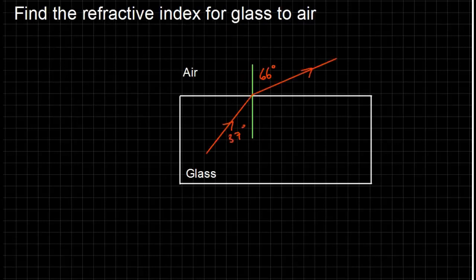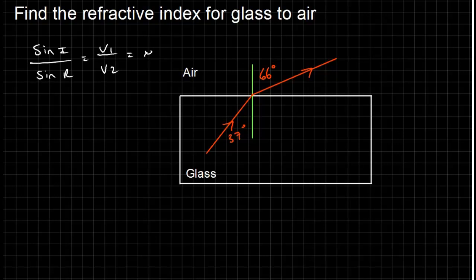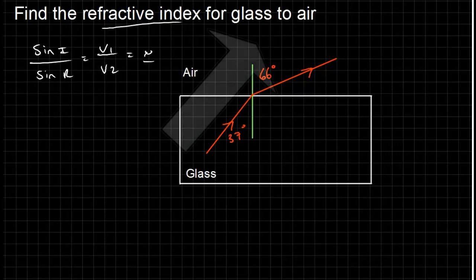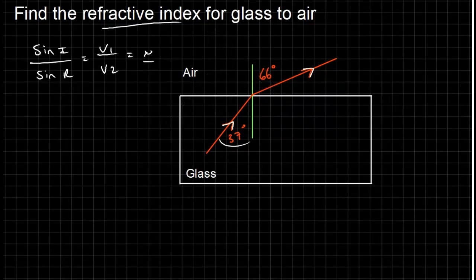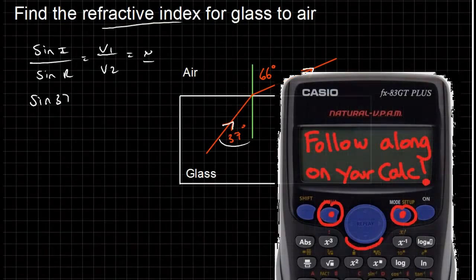Find the refractive index from glass to air. Sine i over sine r, and it's v1 over v2, equal to mu. Write the formula every time. This time the light is going from glass to air, so the angle of incidence is 37. Sine 37 divided by sine 66 equals...